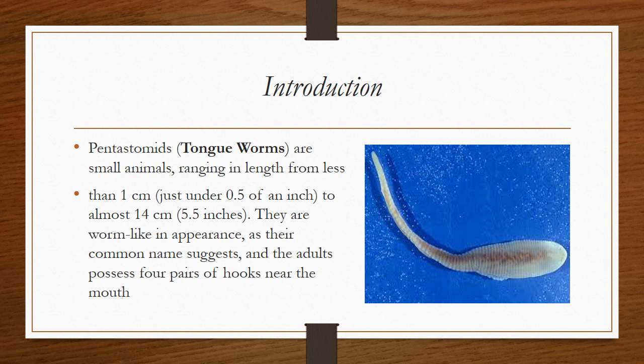are small animals ranging in length from less than 1 cm (just under 0.5 of an inch) to almost 40 cm (about 15.5 inches). Their worm-like appearance is reflected in their common name.